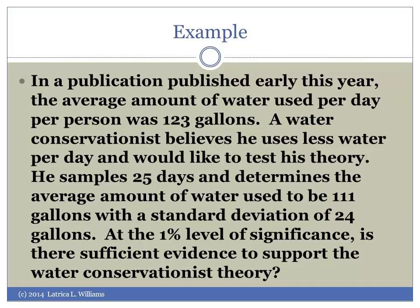In a publication published early this year, the average amount of water used per day per person was 123 gallons. A water conservationist believes he uses less water per day and would like to test his theory. He samples 25 days and determines the average amount of water used to be 111 gallons with a standard deviation of 24 gallons.